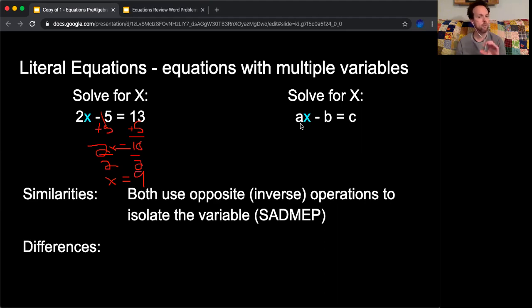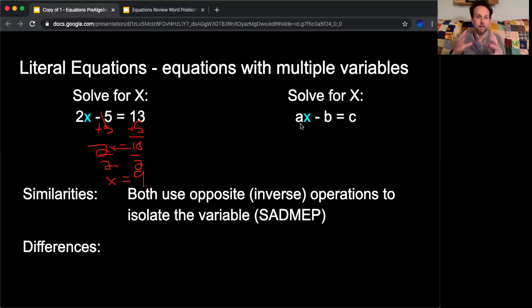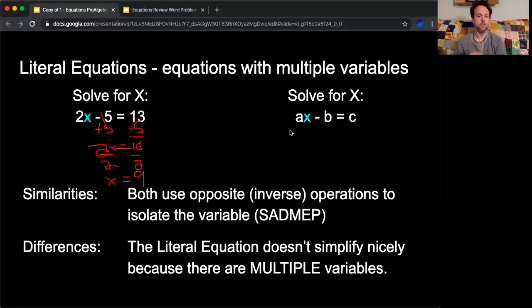It's just that when I do, I'm not going to end up with a nice number like x equals 9. I'm going to end up with something like x equals an expression. So the literal equation, the biggest difference is that it doesn't simplify nicely because there's multiple variables.